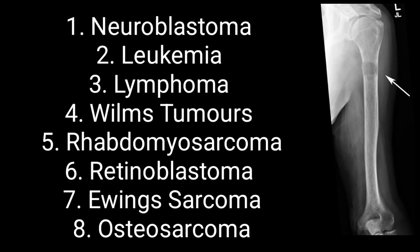Retinoblastoma can also metastasize to bone. It arises from the retina, specifically the back part of the eye. Ewing's sarcoma also arises from the soft tissues around the bone.